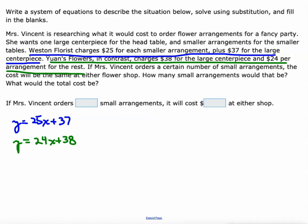That's a system of equations. We can write a new equation by using substitution. I'm going to take this 25x plus 37 and substitute it in for y right here, and I get this new equation: 25x plus 37 equals 24x plus 38. Then we'll solve this equation. I'm going to subtract 24x from both sides. This is why we need to get really good at solving equations with variables on both sides, because that's basically what this is at this point. Then I'll subtract 37 from both sides.